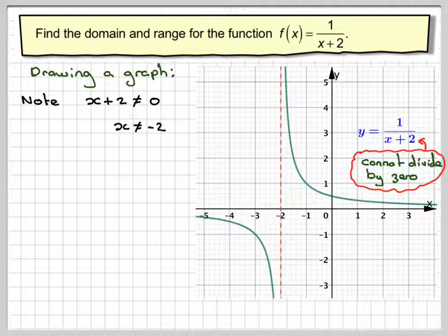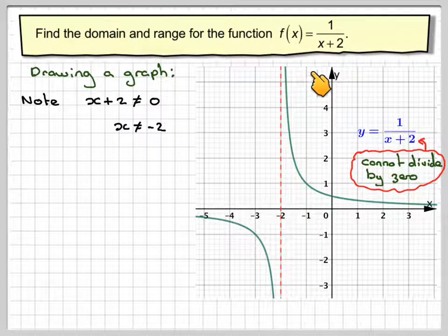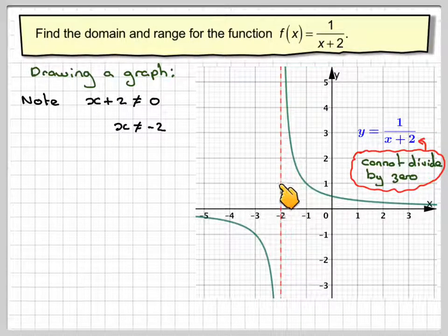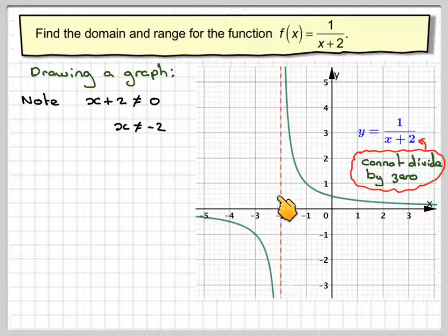And therefore x cannot be equal to minus 2 because if you put minus 2 in here you get minus 2 plus 2 which is 0. Now that indicates that you should really put a dotted line on the graph at x is equal to minus 2 which is this point here.